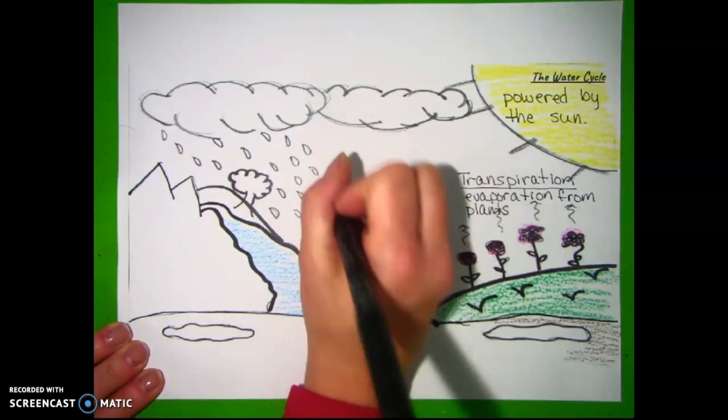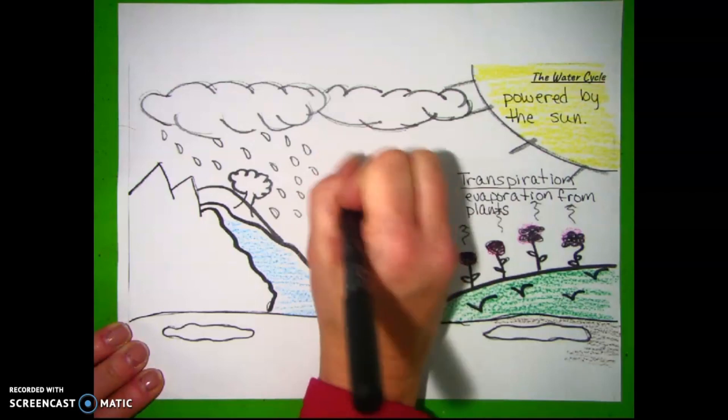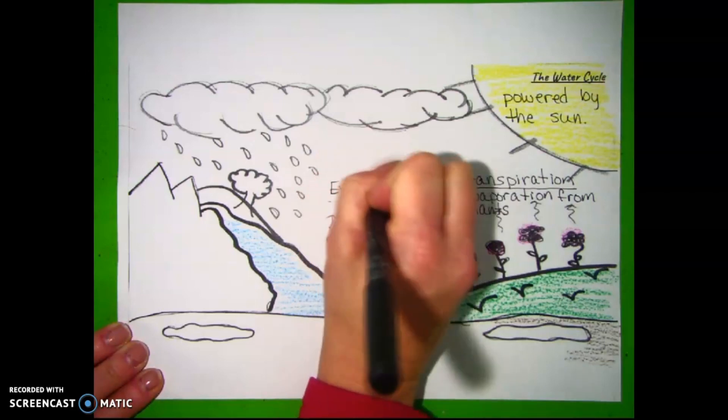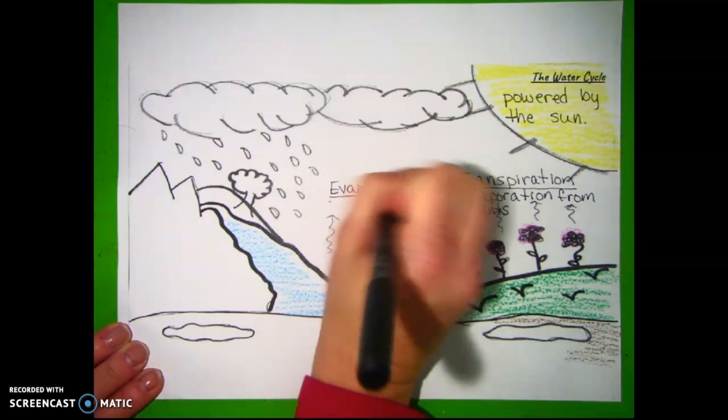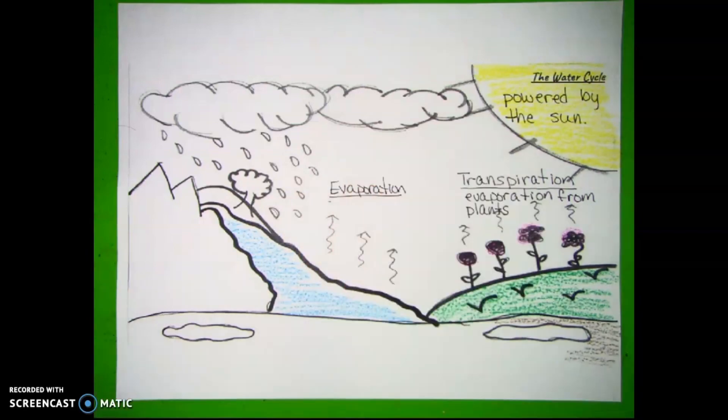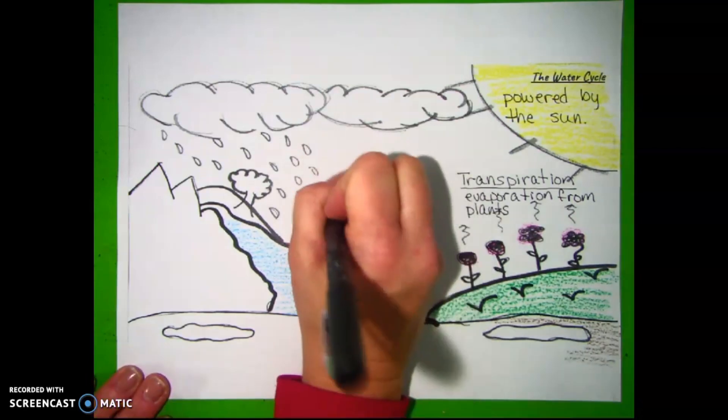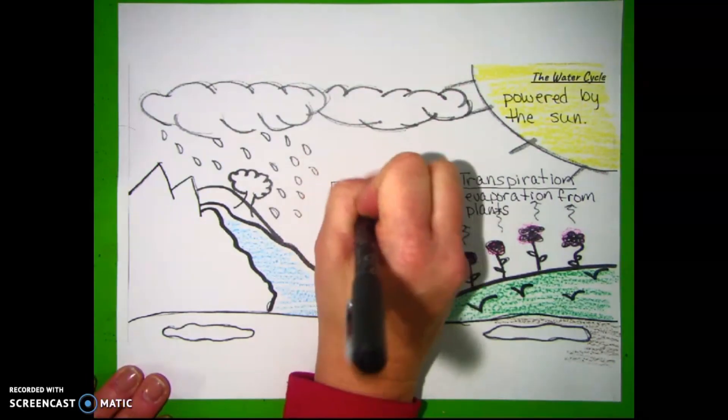The sun also heats up the earth to cause evaporation. Evaporation is turning liquid into a gas as temperatures rise.